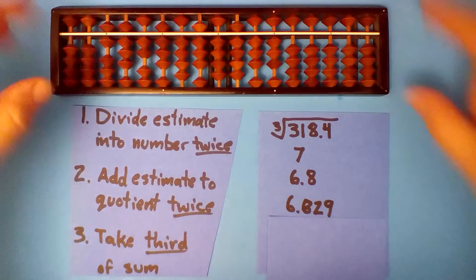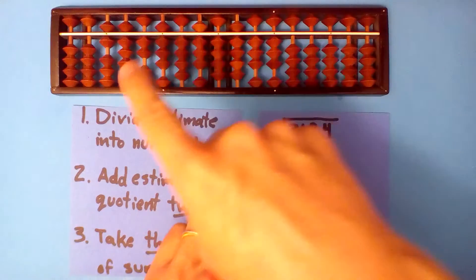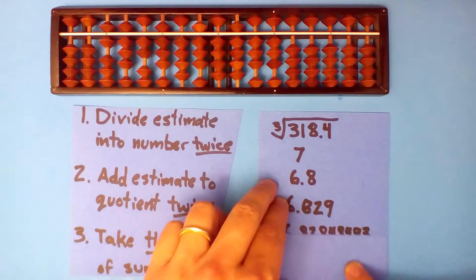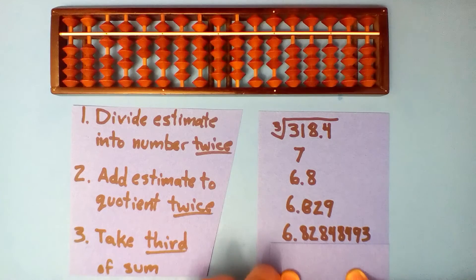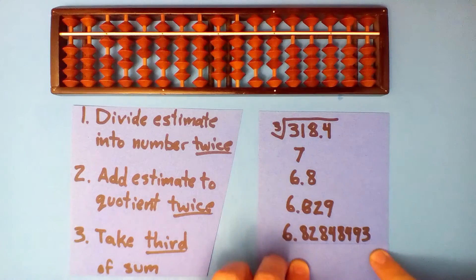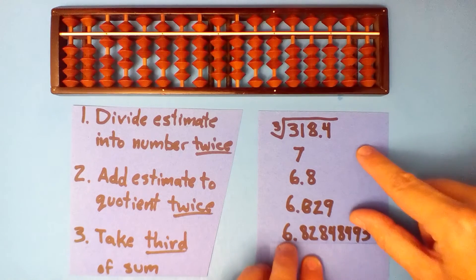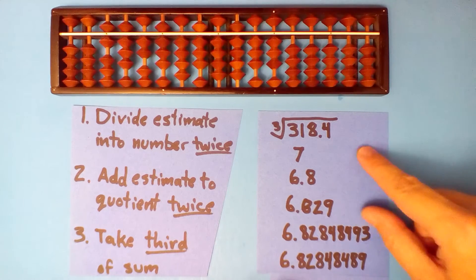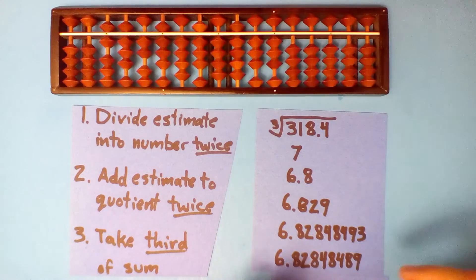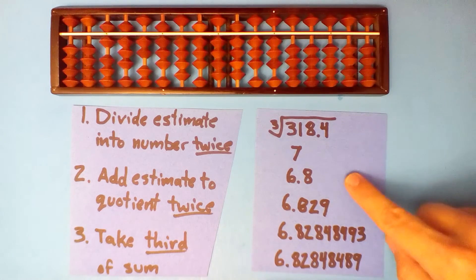Now add your estimate 6.829 to this twice and divide by 3. Our better estimate is 6.828484933. The actual cube root using a calculator is 6.8284848489 — so we're about 400 millionths off. Pretty close, but not perfect.